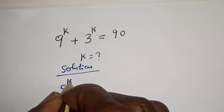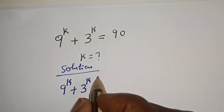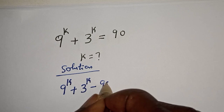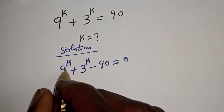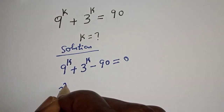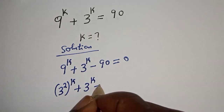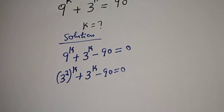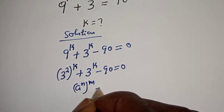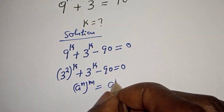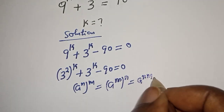9 raised to the power k plus 3 raised to the power k minus 90 is equal to 0. Then 9 raised to the power k can be written as 3 squared to the power of k. Using the exponent rule, a raised to the power n to the power m equals a raised to the power n times m.